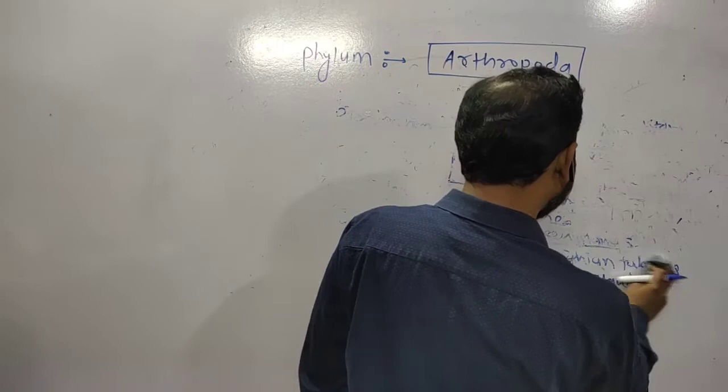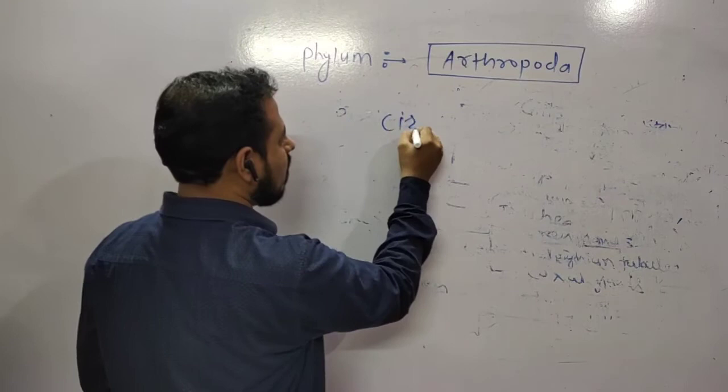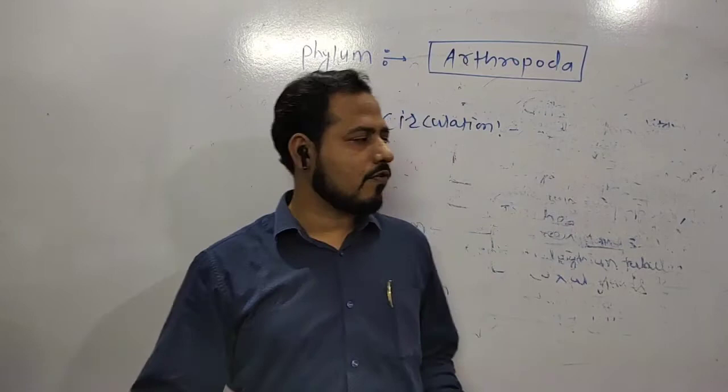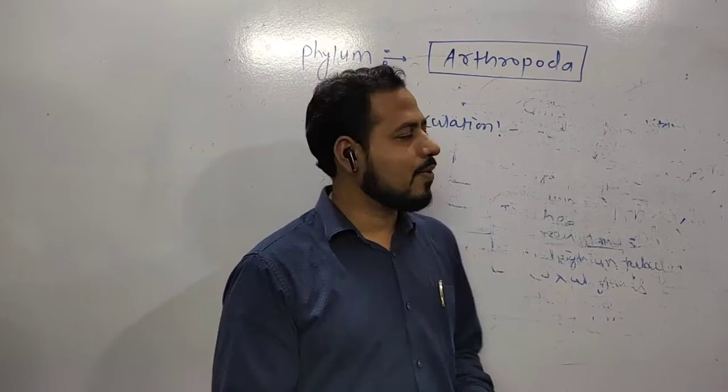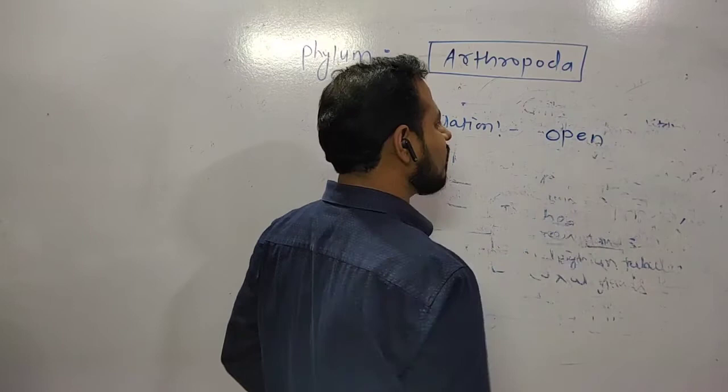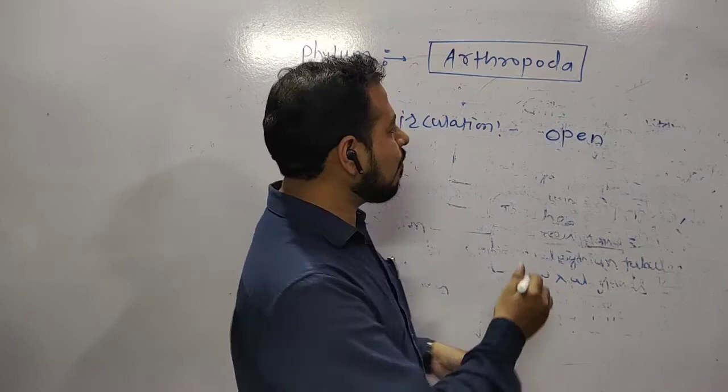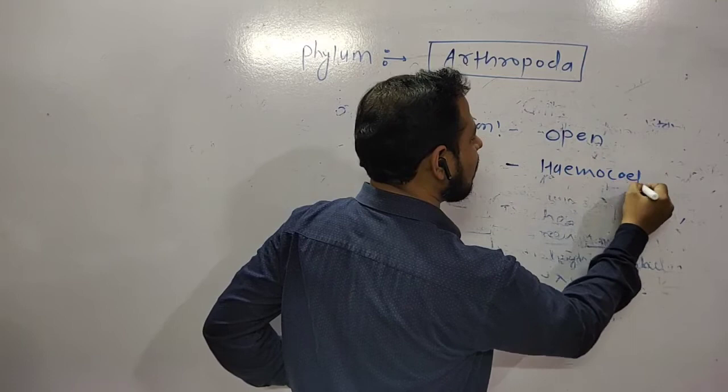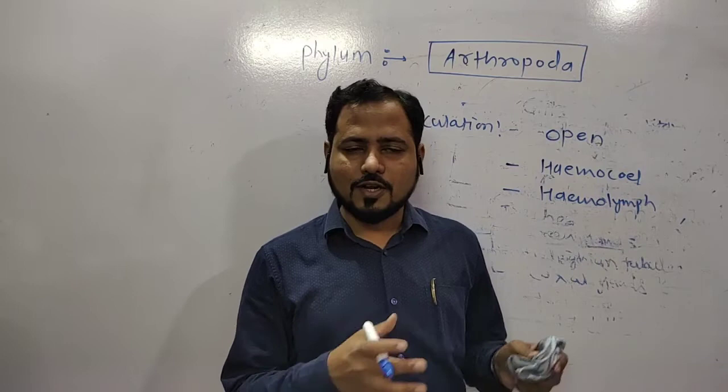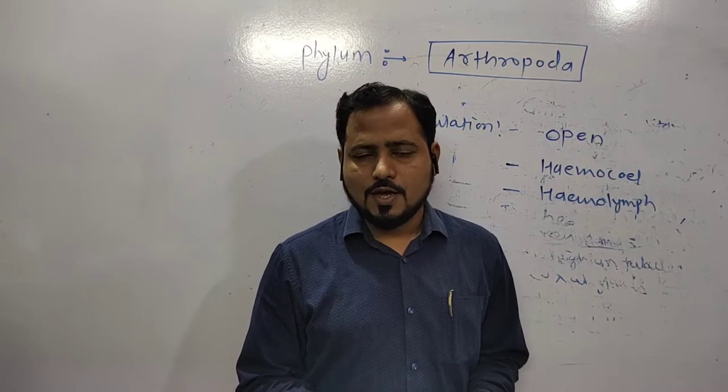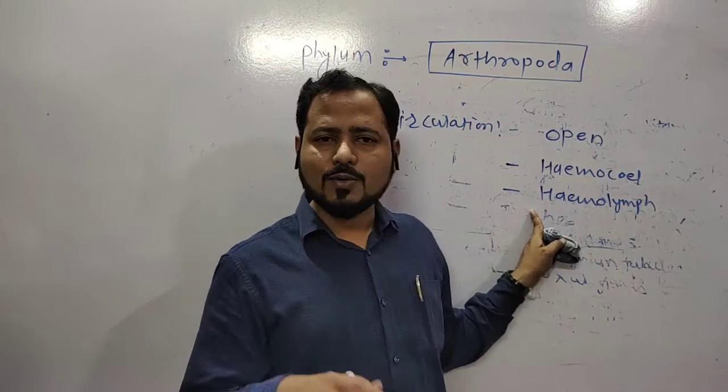We will discuss circulation of these animals. Circulation - concentrate, each and every word is a question, especially for entrance you should concentrate. How is circulation? Circulation is open. Earlier we studied Phylum Annelida where circulatory system is closed, but here circulatory system is completely open. Blood flows in large cavities called sinuses, blood sinuses. The cavity in which blood flows is called hemocoel. They have colorless blood. Hemocyanin pigmentation is there, that's how it is colorless blood you can see.